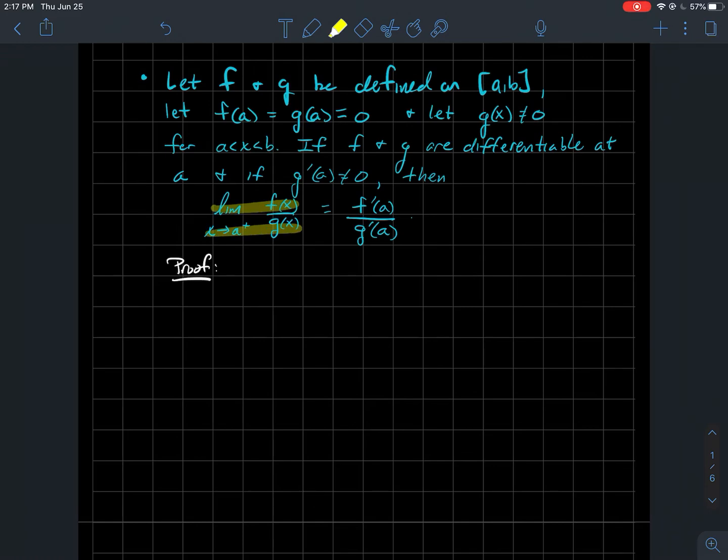The limit of f over g as x approaches a, just from the right, since my x values are to the right of a in this little interval, that should be equal to f prime of a over g prime of a. That's kind of interesting. So how do we prove such a thing?